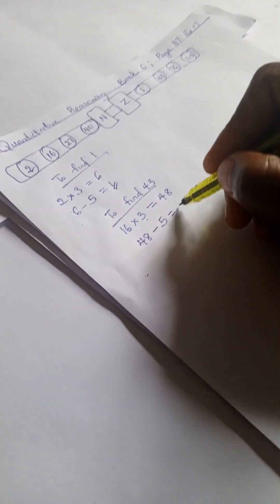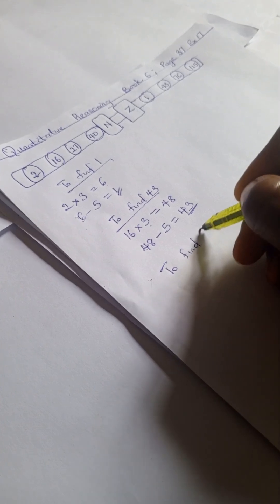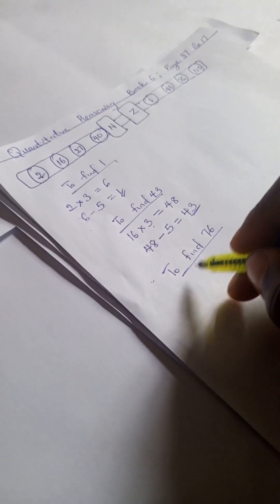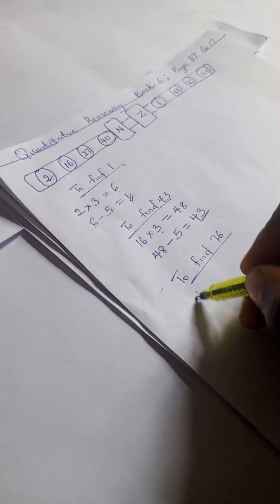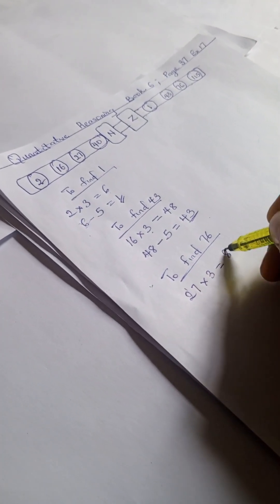To find 76, we have 27 here times 3 equals 81, and 81 minus 5, we have 76.